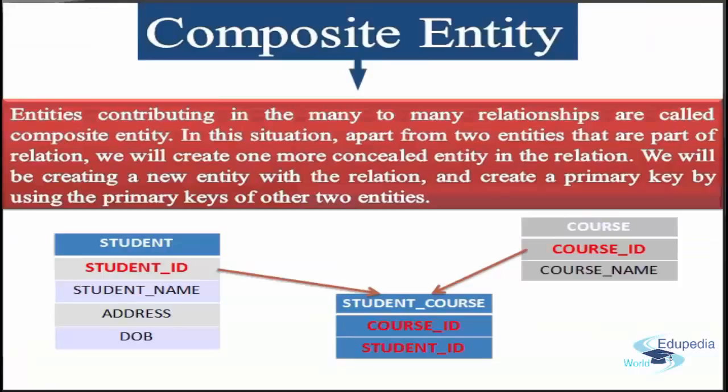Let us see the types of entities. First, let us see the composite entity. Entities contributing in a many-to-many relationship are called composite entities. In this situation, apart from the two entities that are part of a relation, we create one more concealed entity in the relation. It will be created as a new entity within the relation and will create a primary key by using the primary keys of the other two entities.